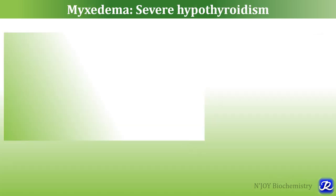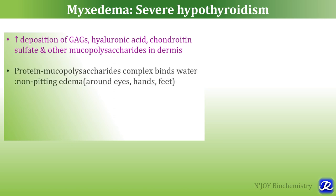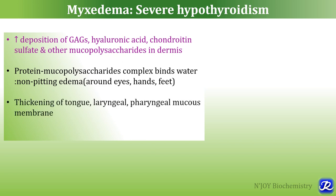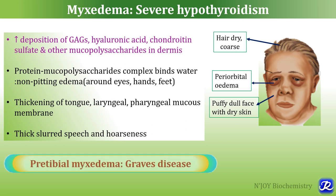Severe hypothyroidism in adults results in myxedema. There is increased deposition of GAGs, hyaluronic acid, chondroitin sulfate, and other mucopolysaccharides in the dermis, resulting in swelling of skin. This protein-mucopolysaccharide complex binds water, producing non-pitting edema around the eyes, hands, and feet. There is thickening of the tongue and laryngeal and pharyngeal mucous membranes, resulting in husky, thick, slurred speech and hoarseness. The skin is dry, puffy, and dull, with periorbital edema and dry, coarse hair. Note that pre-tibial myxedema is present specifically in Graves disease.